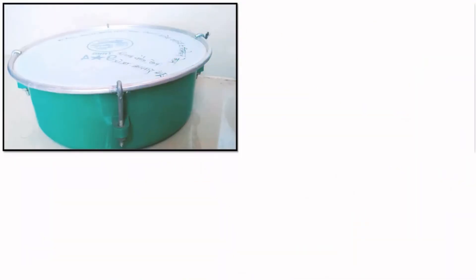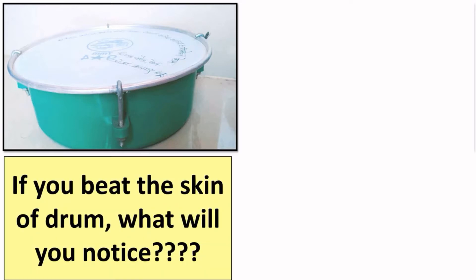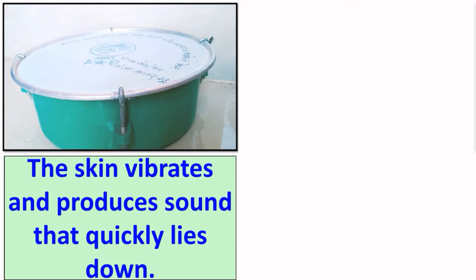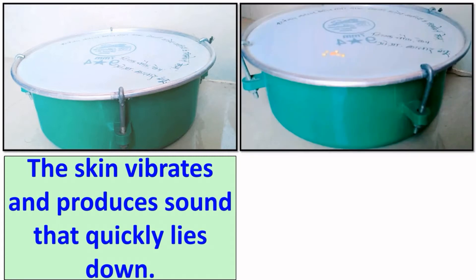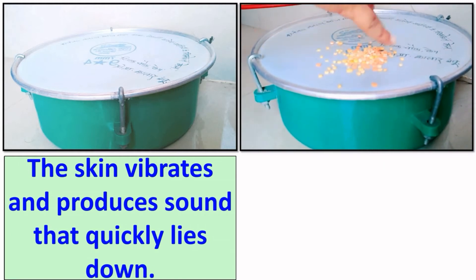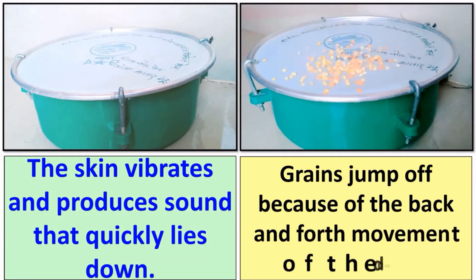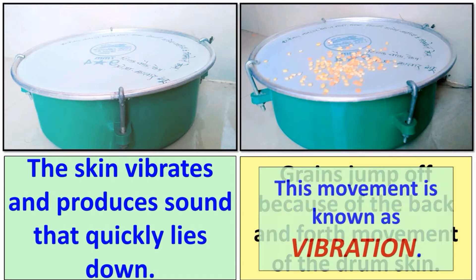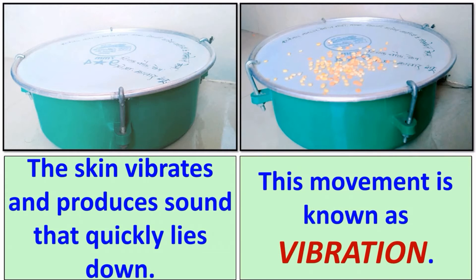Now let's see how sound is produced with an activity. Take a drum — if you beat the skin of a drum, the skin vibrates and produces sound that quickly dies down. Now if you beat the drum skin and quickly put some grains on it, you will see the grains jump off because of the back and forth movement of the drum skin. This movement is known as vibrations. All kinds of sound that you hear are produced because of vibrations.